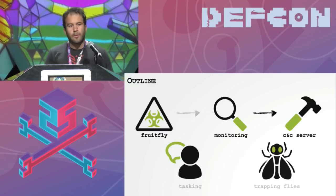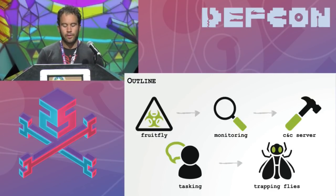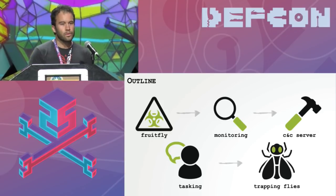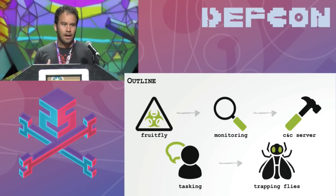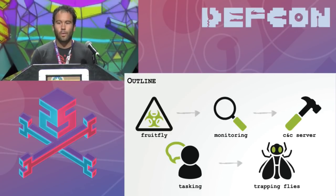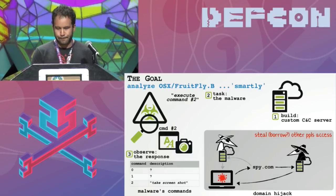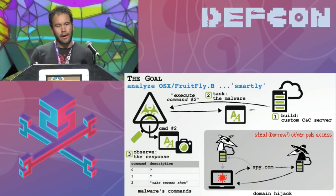Today we're going to start by looking at an interesting piece of malware called Fruit Fly, and we're then going to talk about some monitoring tools and capabilities I wrote for Mac OS. Then how I built a custom command and control server, following this how I used that server to task the malware in order for it to reveal its capabilities to me, and finally what happened when I put this command and control server on the Internet.